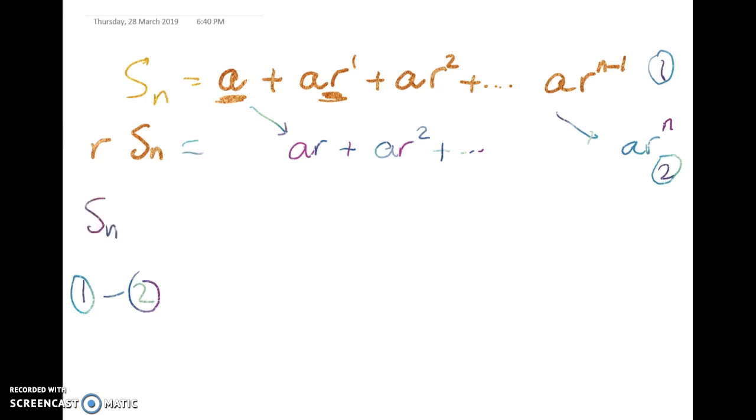And I get this. Sn minus r Sn on the left hand side. Now look at what's going to happen on the right hand side. I'm going to have a here in this column. So a take away nothing gives me a. But here I've got ar take away ar.